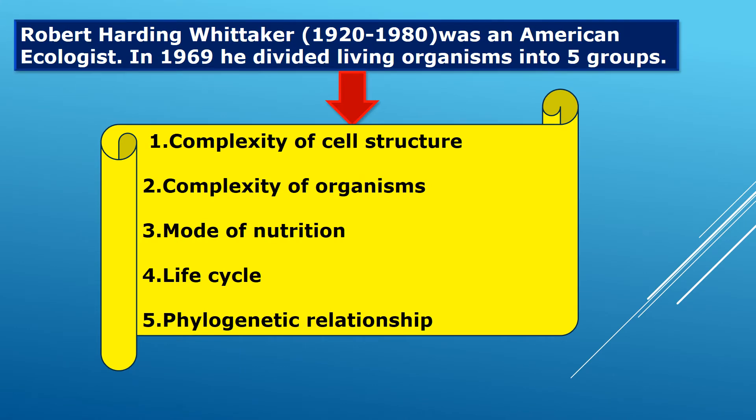Scientist Robert Whittaker divided living organisms in 1969 into five kingdoms. For this he considered five criteria: first, complexity of cell structure; second, complexity of organisms; third, mode of nutrition; fourth, life cycle; and fifth, phylogenetic relationship. Let us see all these criteria in detail.